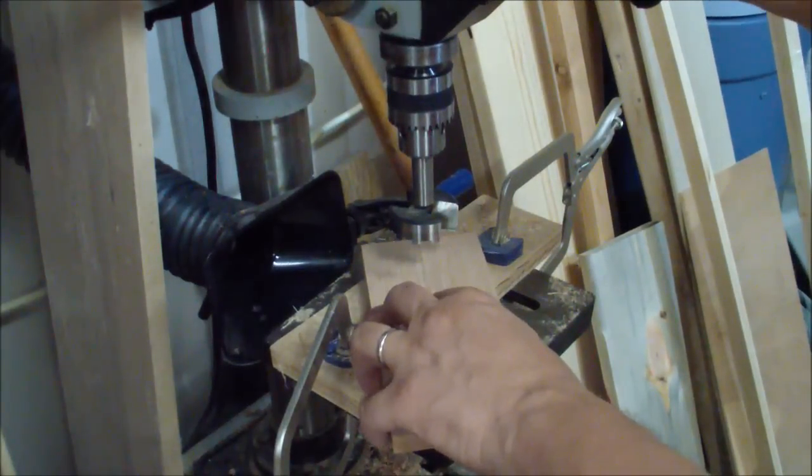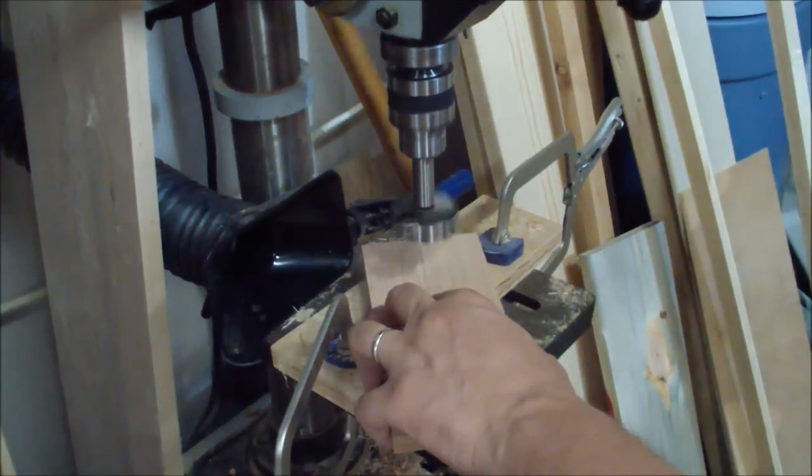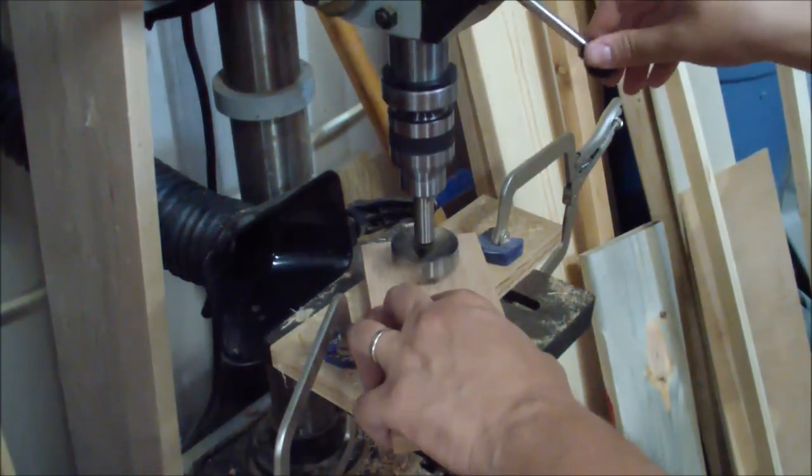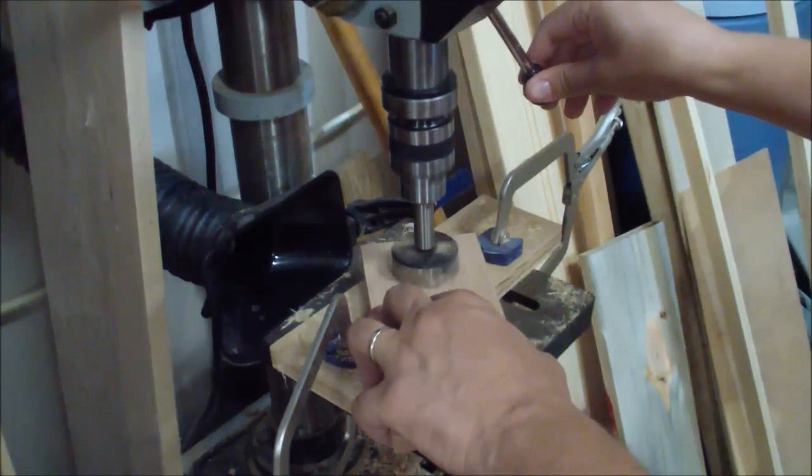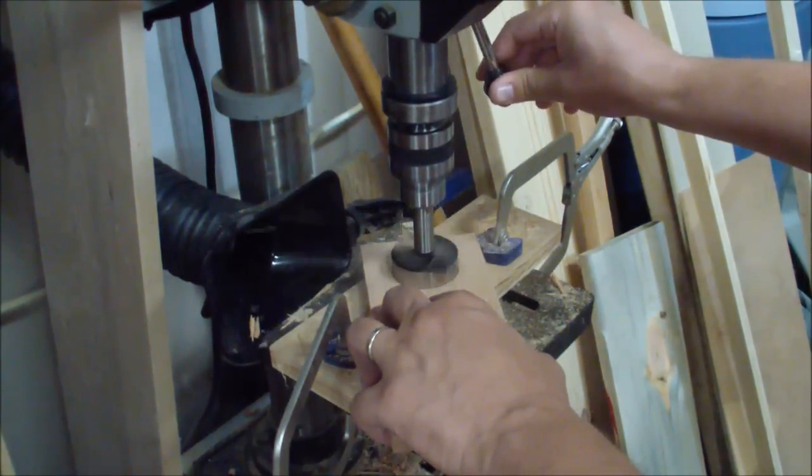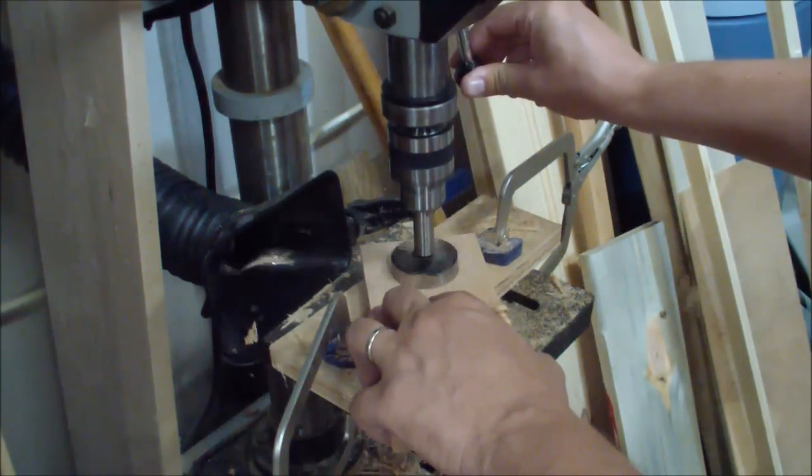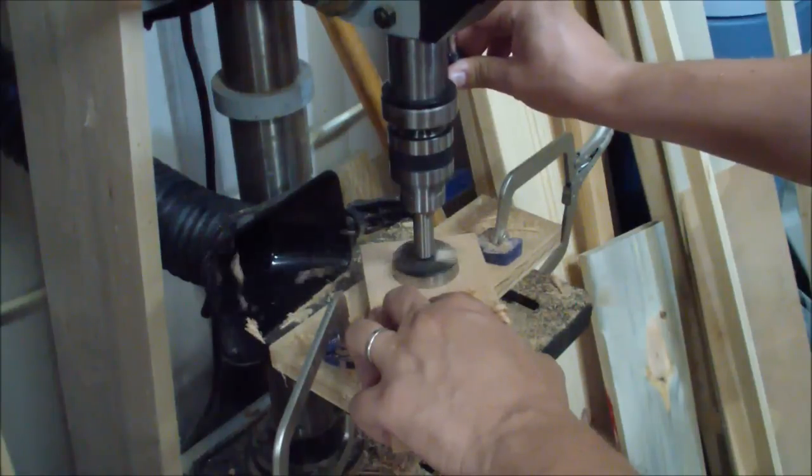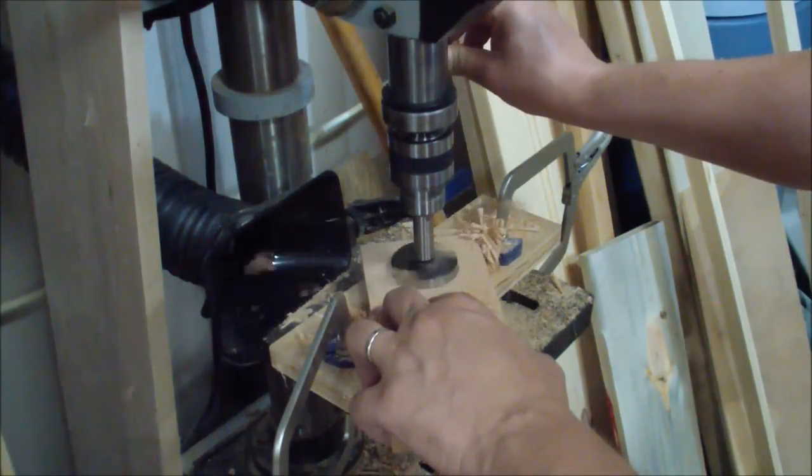Next, I headed to the drill press and used a two-inch Forstner bit to drill the hole for my magnet. I probably could have used a smaller magnet, maybe one inch or one and a half inch, but since this was the first time using something like this, I wanted to go big.